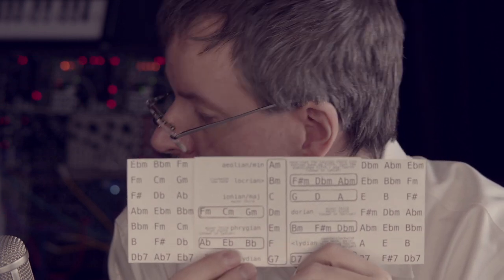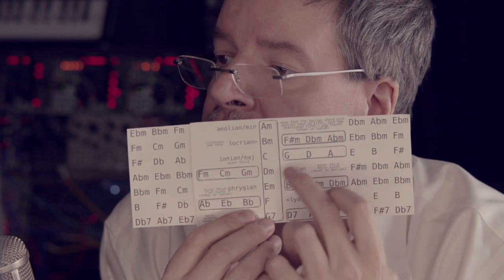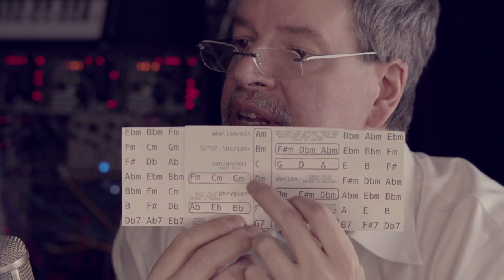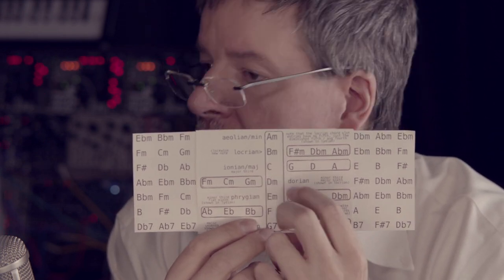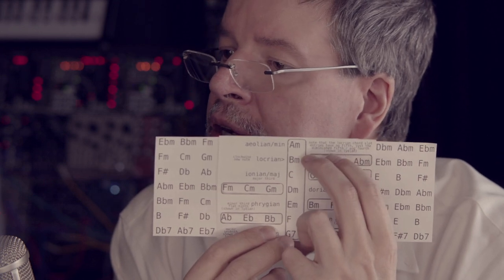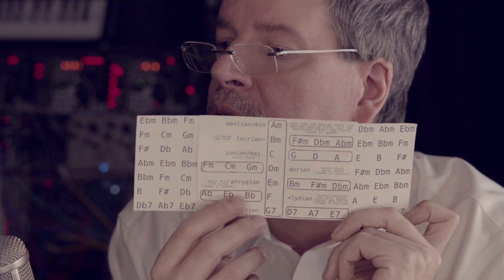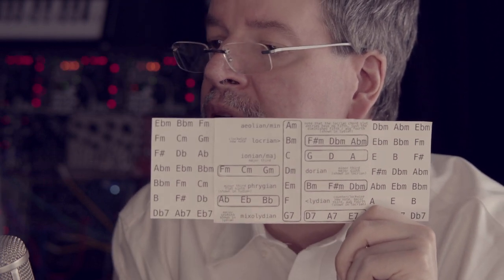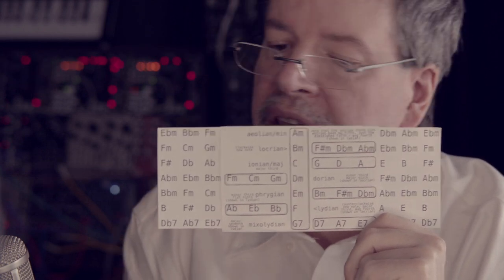We've got this slot as the key of C major — it says Ionian major, major third, and it shows C there. That's the key of C major. It also counts as A minor and other things as well. All of the chords are shown on there. For instance, if you wanted to do Mixolydian, you would be choosing G to be working on that.